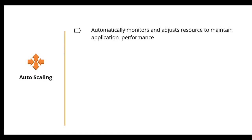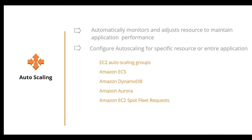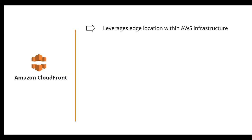AWS Auto Scaling lets you configure automatic scaling of AWS resources — it automatically monitors and adjusts resources to maintain application performance. You can configure auto scaling for specific resources or the entire application. Auto scaling groups are available for EC2 instances, EC2 Spot Fleet requests, DynamoDB, and Amazon ECS.